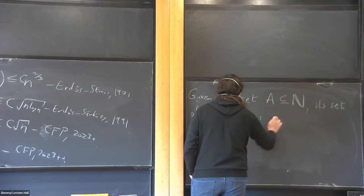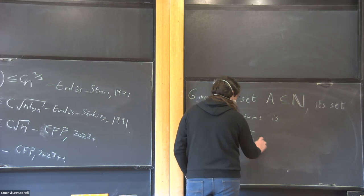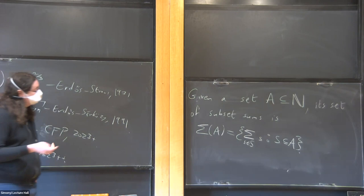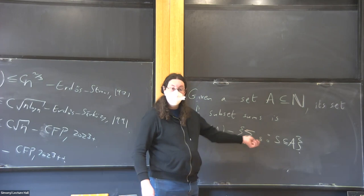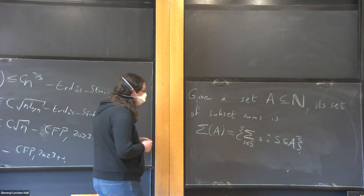...we define Σ(A) as the set consisting of all sums over subsets s of A — so you take all 2^|A| subsets of A and add up all the elements. If you have the null set you just get zero, so you're allowing zero to be included. This is a sort of relative of the basic object of additive combinatorics, which is just taking sum sets A+B or A+A, but this is a different and also fairly basic object.